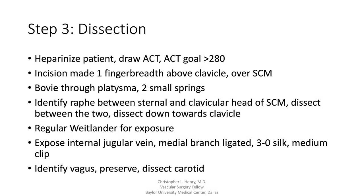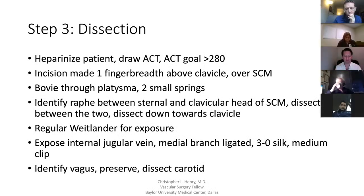A lot of times the SCM cleft is pretty apparent, but sometimes it can be difficult to identify. Dissect down between those two heads, making sure that you dissect downwards towards the clavicle because you're really trying to get down low on the carotid. If you skive upward it makes the operation more difficult, especially if you have a low lesion. The regular Wheatlander is inserted for exposure. Find the IJ; there's usually a crossing branch you ligate with a 3-0 silk and a medium clip to double-ligate it. Identify the vagus nerve, protect it, then get to the carotid after that.